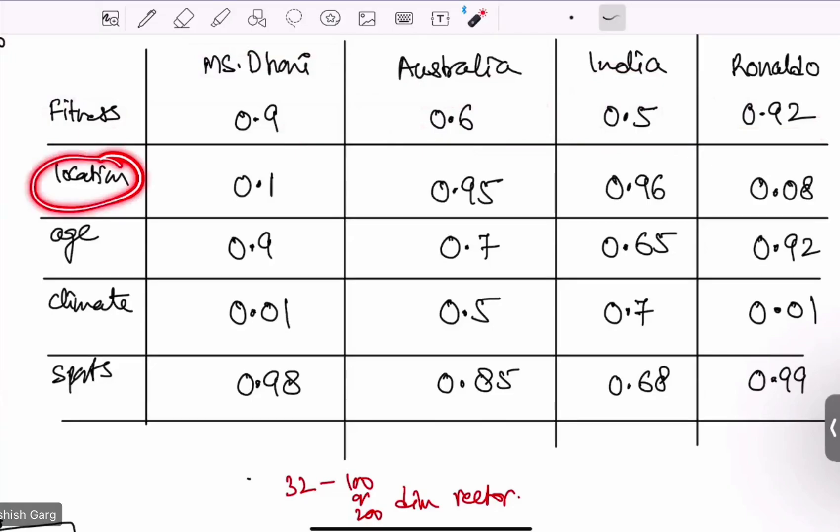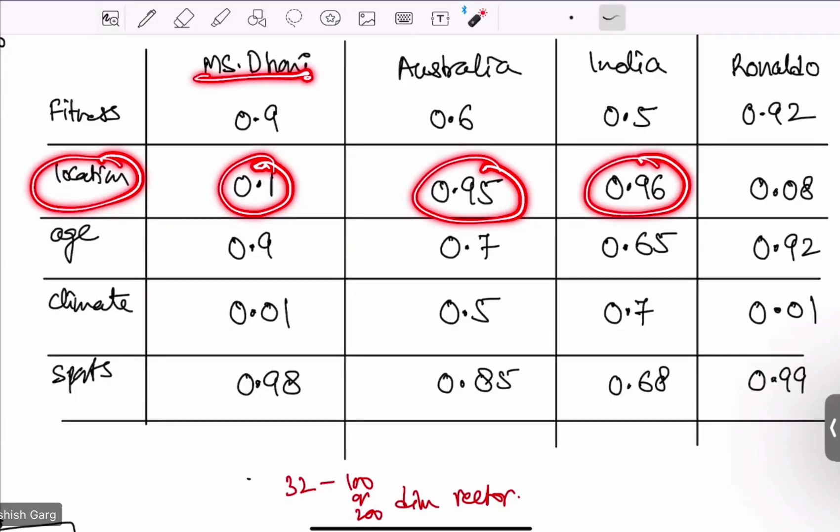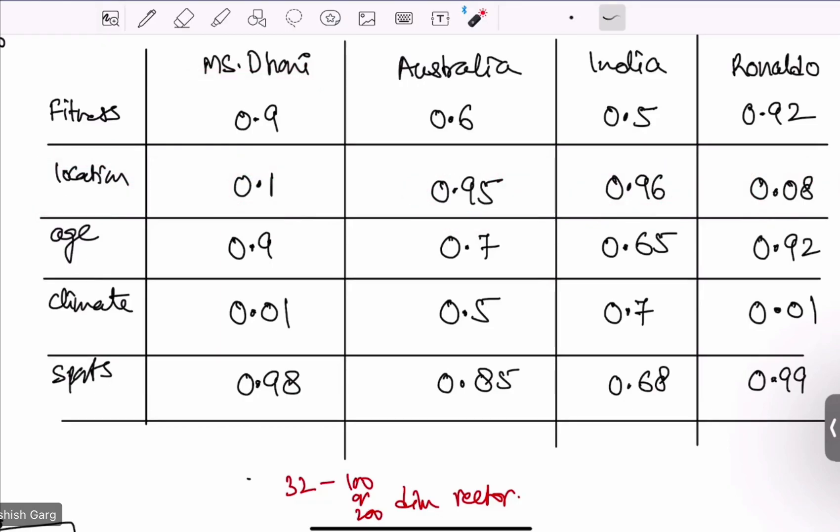For location, MS Dhoni is not a location, but location is somehow associated where MS Dhoni lives. So we have given some value, if not zero. For Australia, it is a location. For India, it is a location. Ronaldo is also not a location, but he also lives at some location. So there is some value, but not as large as Australia or India.